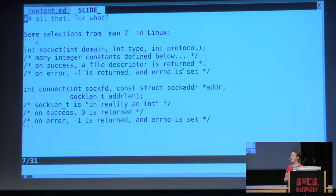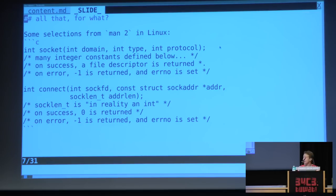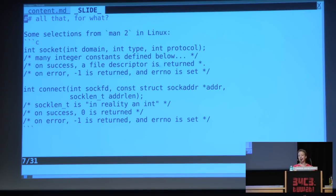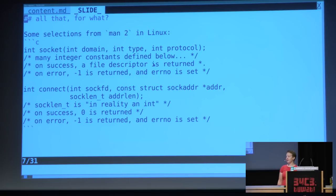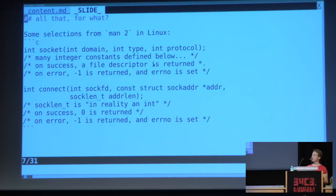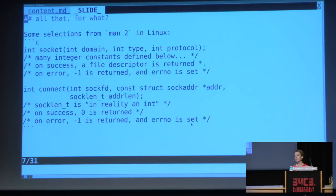To give a concrete example, this is a selection from man2 in Linux — the signature for socket, which would be the first thing we call if we want to do network communication. Socket wants a magic number, another magic number, and another magic number, and it gives us back a magic number — or another magic number to tell us we got an error — and we should look somewhere else for another magic number to find out what the error was.